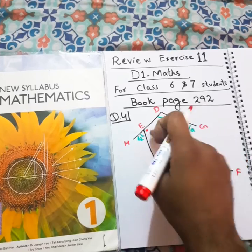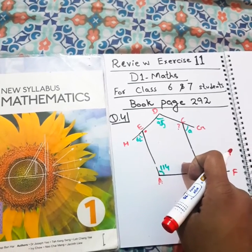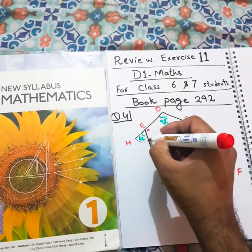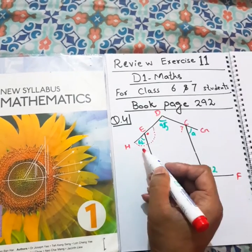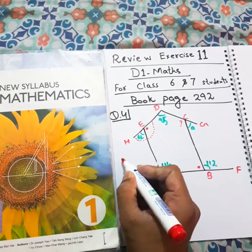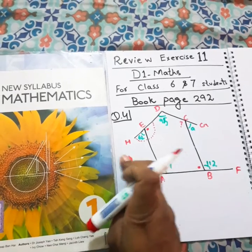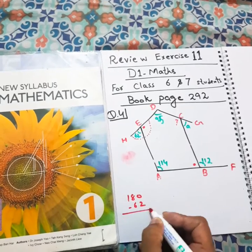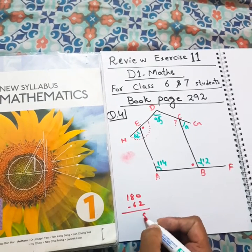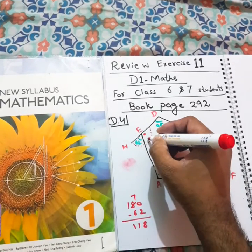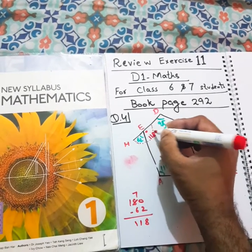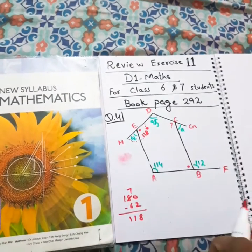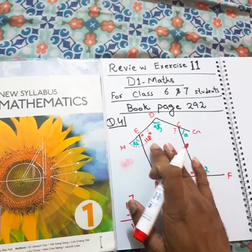If we want to find this angle, at least these two should be found first of all, and these two are easier to find. Because we know that from here to here it's a semicircle on a straight line, and the angle is 62°. If 62 is subtracted from 180 degrees — 10 minus 2 is 8, and 7 minus 6 is 1 — so that means there will be angle 118° here. At least one angle has been found, which was one of our targets.